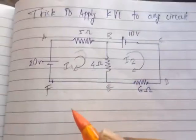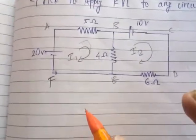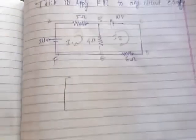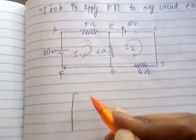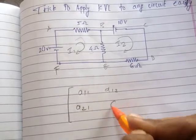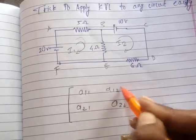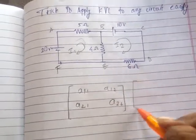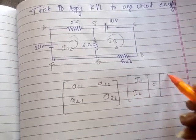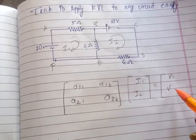Now we have two loops and we need to write the matrix. To write the matrix, you need to know the most basic concept: the position of the elements. We have positions a11, a12, a21, and a22. Here we write the currents I1 and I2 that we need to find, and on the right side will be the voltages through the first and second loops.